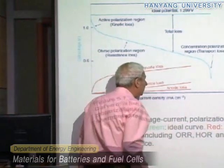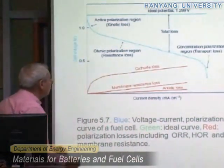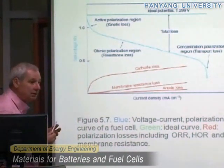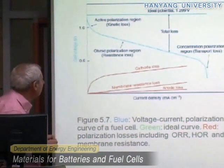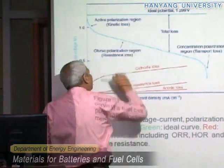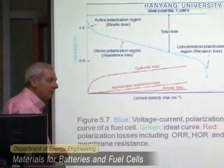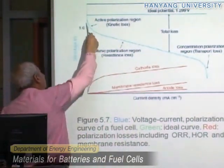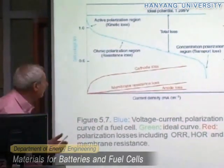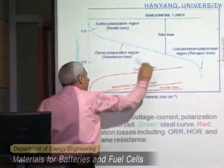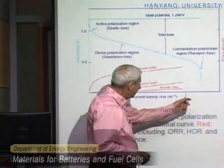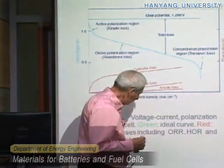And then finally you will have a maximum current that you can drive off. To make this fuel cell operating, you should reduce these losses. Because if you reduce these losses, the voltage will go higher and you have higher energy. So you have to reduce the kinetic loss and use catalysts like platinum to do that. You have to reduce the ohmic loss, so you have to use a very highly conductive electrolyte. And you have to reduce the mass transport loss, so you have to use very large area electrodes.